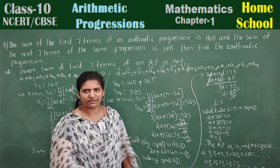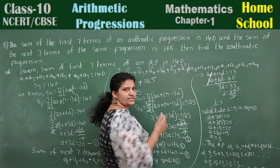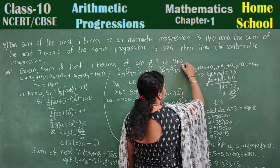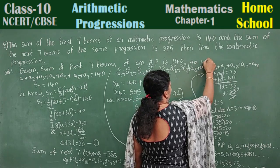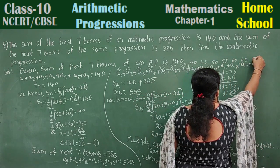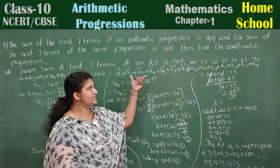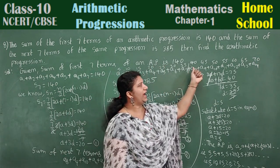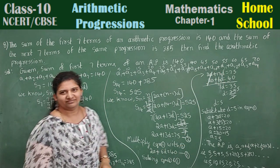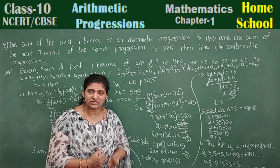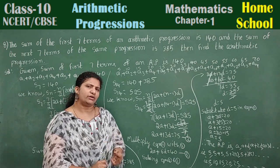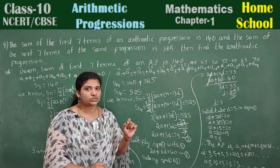If you want, you can find the remaining 7 terms too. It's easy — just keep adding the common difference of 5. After 35: 40, 45, 50, 55, 60, 65, 70. The sum of these next 7 terms will be 385, confirming our answer. When the question asks to find the AP, write at least 4 to 5 terms and put 'so on'.